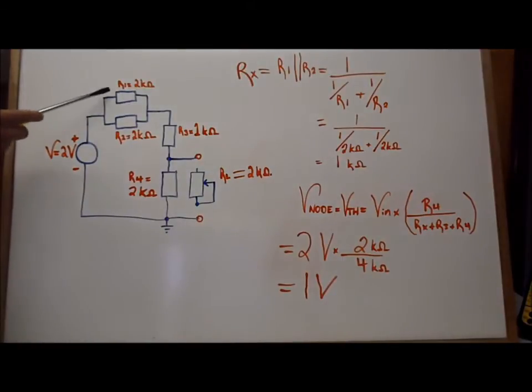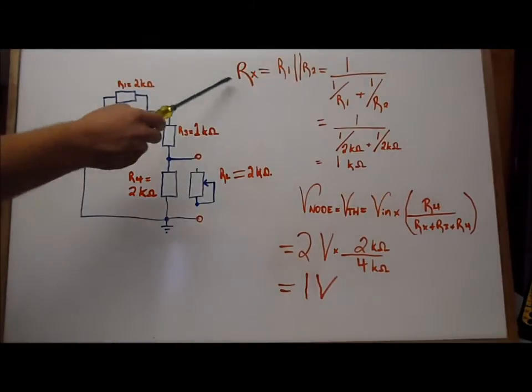And as you can see here, R1 and R2 are in parallel. And in order to simplify it, what we're going to do is take them in parallel to reduce it to a series resistance. And I'm going to call that product Rx.